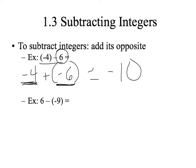Add its opposite: 6 minus negative 9. Anytime you have a subtraction of a negative, it's really easy because you just basically turn this into a positive. I would add the opposite, so I'd add 9. 6 plus 9 would just be 15.